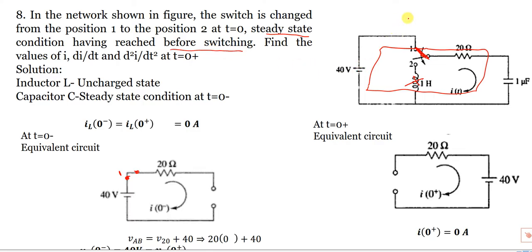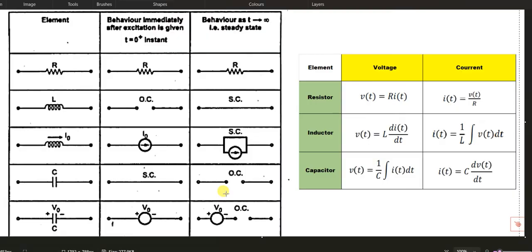Switching takes place at t=0 plus. This is t=0 minus, and this is t greater than 0. Steady state is already reached before switching. If you click the switch, the capacitor initially acts as a short circuit. When infinity time is reached, the capacitor has already reached steady state, acting as an open circuit.